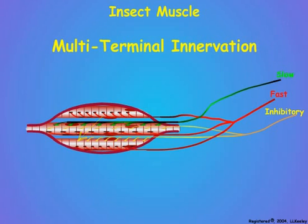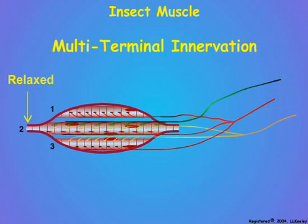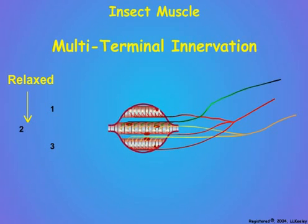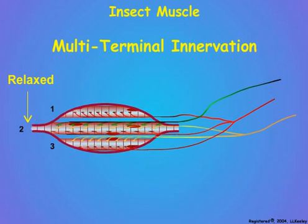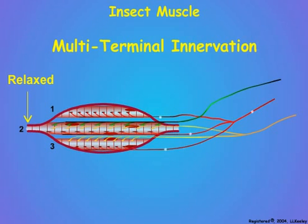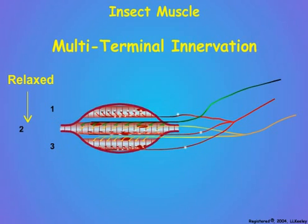Multi-terminal innervation occurs because action potentials are not propagated over the surface of insect muscle fibers, as they are for vertebrate muscle fibers. Insect end plates depolarize only the localized region of the muscle fiber near the end plate, and cause this region to contract.